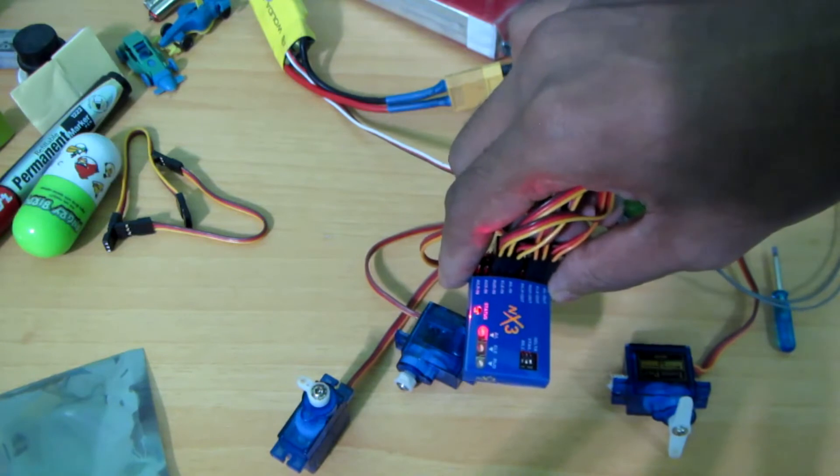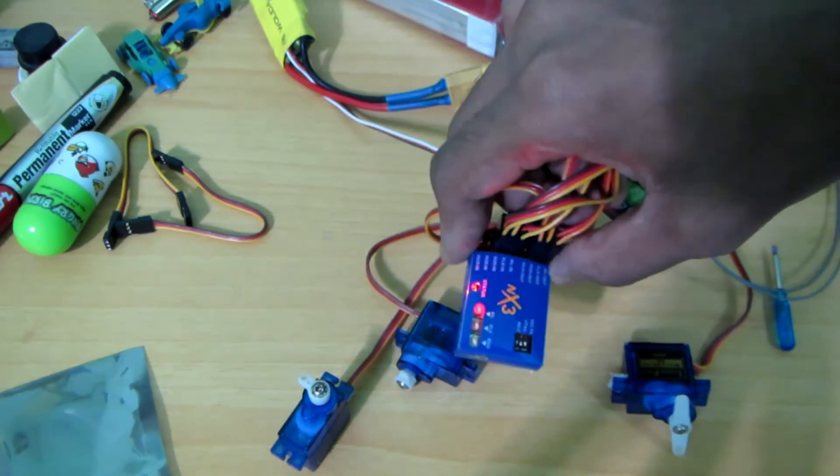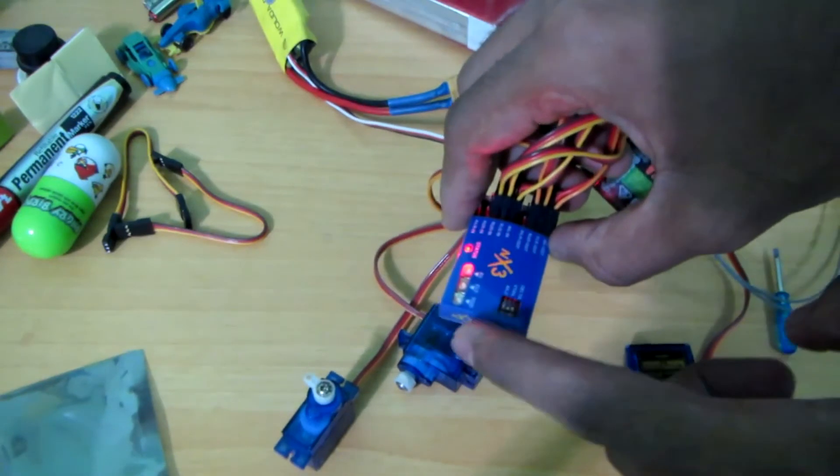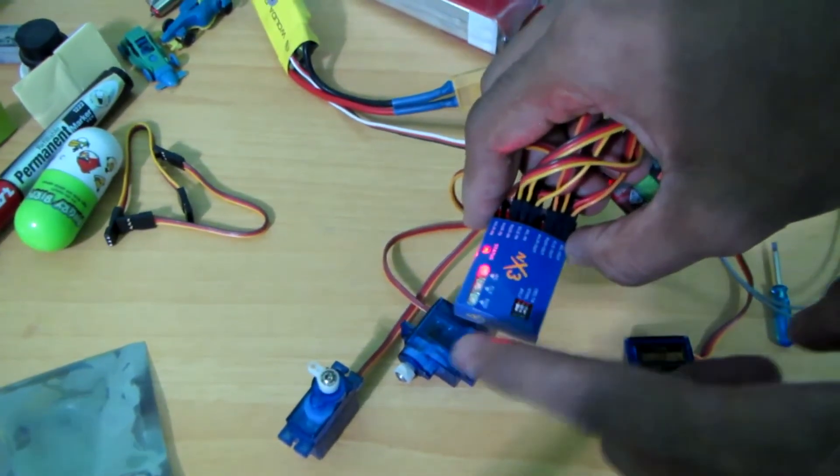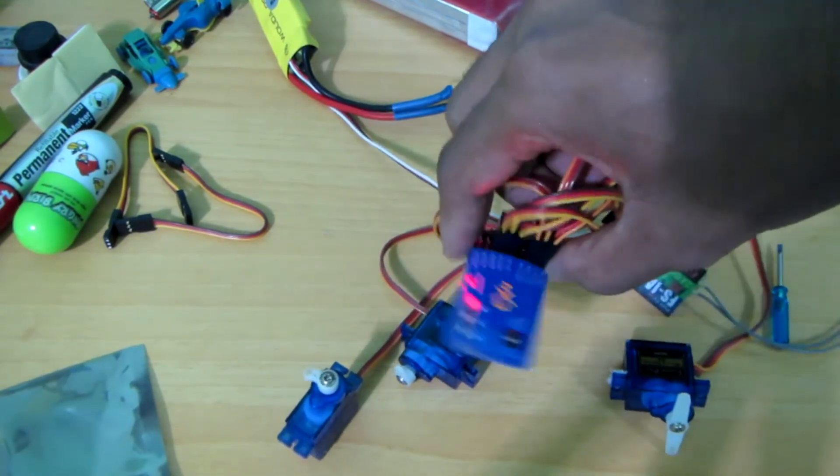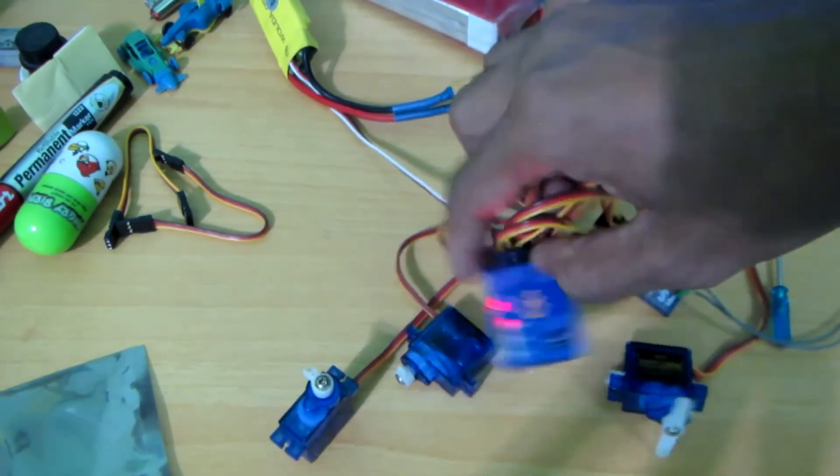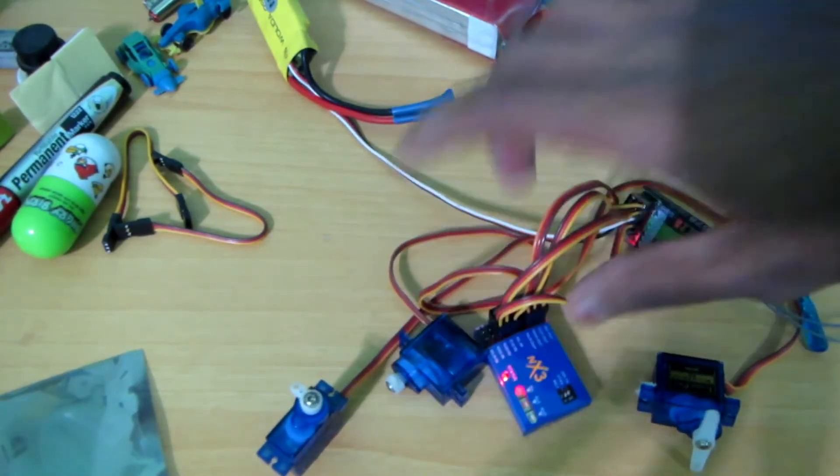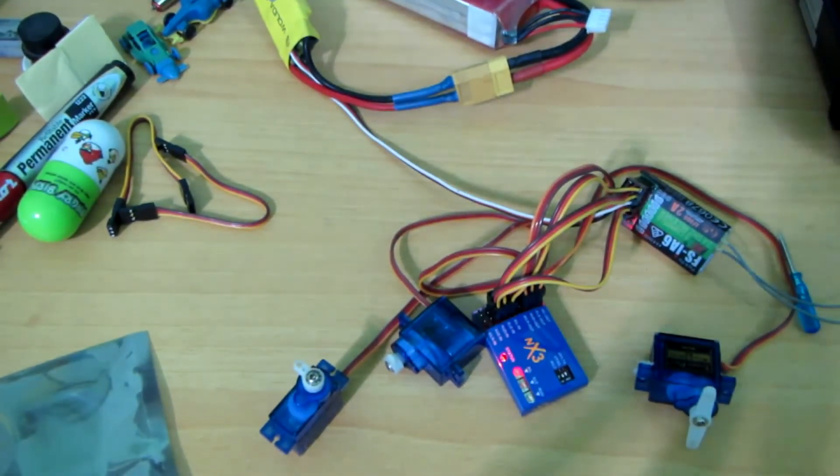And try to connect this at the CG of your plane, and this side is the front side, that means this side is going toward your plane's front side. That's it, thanks for watching.